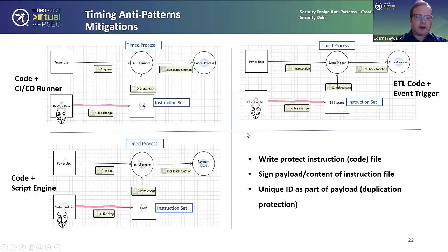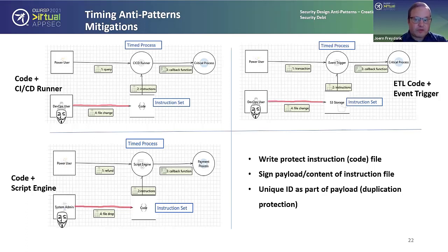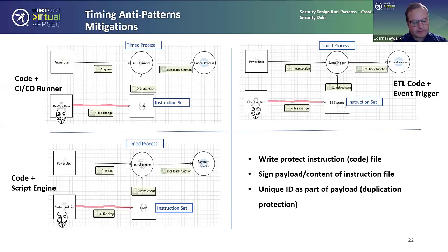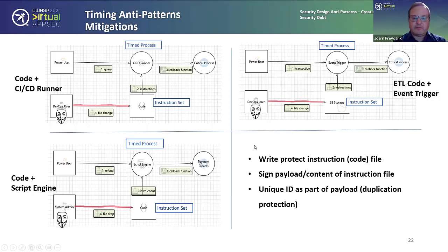What are the mitigations? We see different variations of the same thing across different systems and setups. We can write-protect the instruction or code file — though in some cases like a queue that needs a persistent file, that may not be possible. A more expensive option is to sign the payload or content of the instruction file. We also have to consider the case where an attacker requests a refund, fishes out their own transaction from the queue, and duplicates the file. In that case we need to introduce a unique ID as part of the payload, sign it, and protect it against duplication.